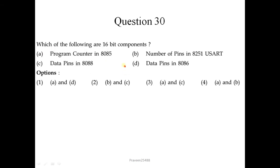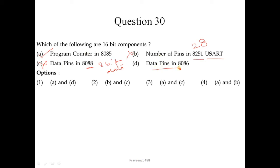Question number 30: which of the following are 16-bit components? The program counter in 8086 stores a 16-bit address, so this is correct. The number of pins in 8251 USART is 28 pins, so it is not a 16-bit component. The 8088 has circuitry similar to 8086, but it has 8-bit data lines — so this is not a 16-bit component. The data pins in 8086 have 16-bit data lines, so this is also correct. A and D are correct; the correct option is the first one.